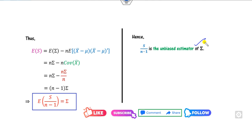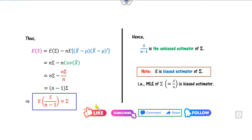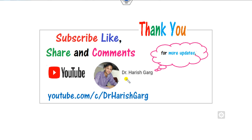Hence, S over n minus 1 is the unbiased estimator of sigma, and capital S is the biased estimator of sigma — meaning the MLE of sigma is a biased estimator. This is how you can easily prove and learn the concept. I hope you like and comment on my video. In the next lecture, we will see how to check the independence of the sample mean and the covariance matrix.